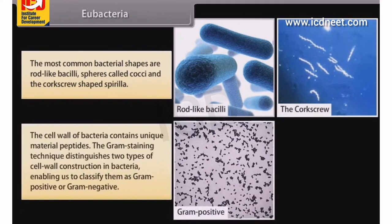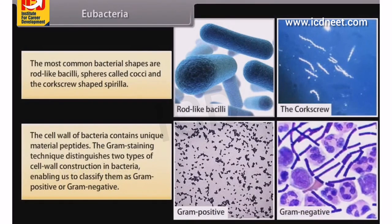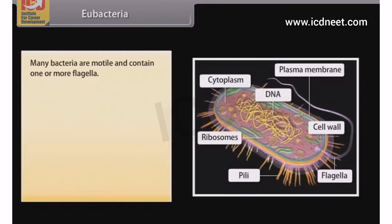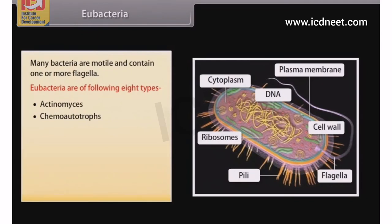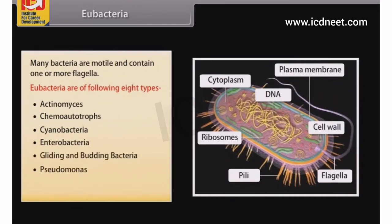The cell wall of bacteria contains a unique material, peptidoglycan. The Gram staining technique distinguishes two types of cell wall construction in bacteria, enabling classification as gram-positive or gram-negative. Many bacteria are motile and contain one or more flagella. Eubacteria are of the following eight types: Actinomyces, chemo-autotrophs, cyanobacteria, enterobacteria, gliding and budding bacteria, Pseudomonas, Rickettsias and Chlamydias, and Spirochetes.